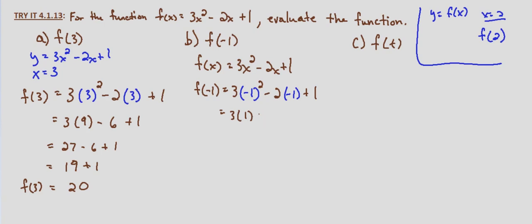I'll write that out in a different way. This is plus negative 2 times negative 1, which is positive 2 plus 1, which equals 3 plus 2 plus 1, which equals 5 plus 1, which equals 6. So f of negative 1 equals 6.